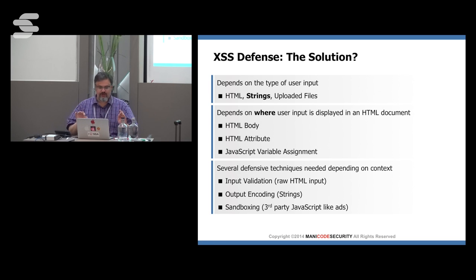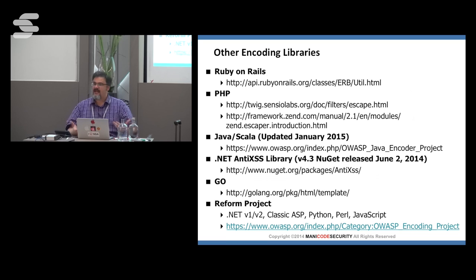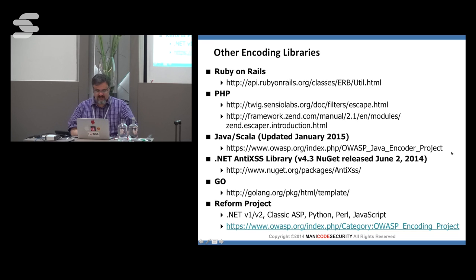Here's the real solution. For phase one, we want to do output encoding. We definitely want to do input validation — it's still a good defense — but it's the output encoding that's going to save us. In every major language there's an output encoding library built in. Ruby on Rails has had it built in for a while. In PHP, the Zend framework has a great escaper. For Java, I'm going to show you the OWASP Java Encoder project — a very high performance escaping library. In .NET they have the anti-XSS library. In Go — learn Go, it is on the rise.